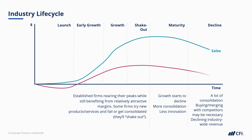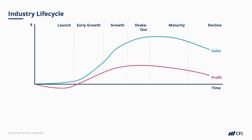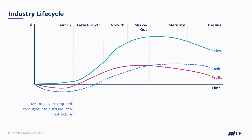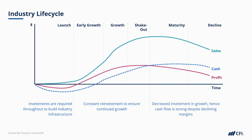If we plot industry profits over this, you'll see it's negative early on, before peaking in the shakeout phase and eventually declining. Interestingly, cash flow charts a similar course, but it lags profit. Cash investments are required through the launch phase to actually build the industry infrastructure. Then, as an industry grows, there's constant reinvestment to ensure continued growth. So cash flow tends to lag profits through to maturity, where investment and growth becomes minimal, and even though margins start to decline, cash flow tends to be quite strong.